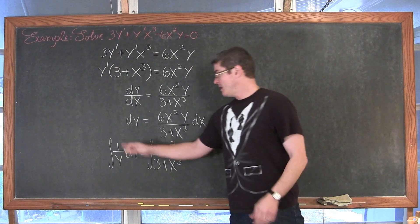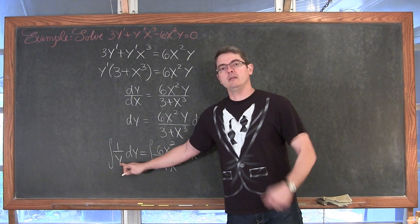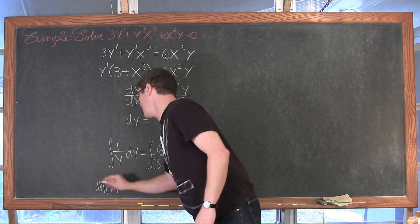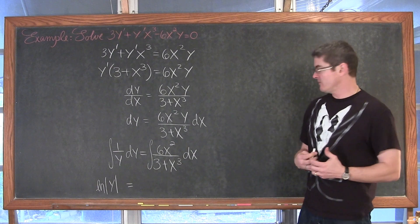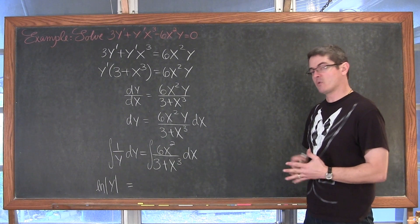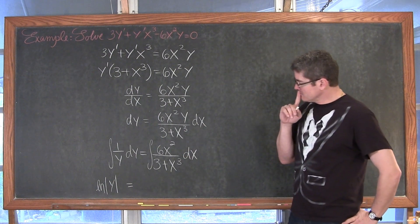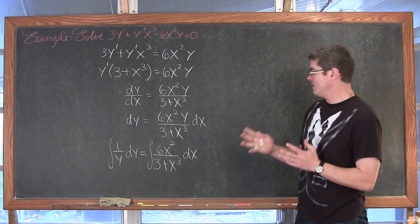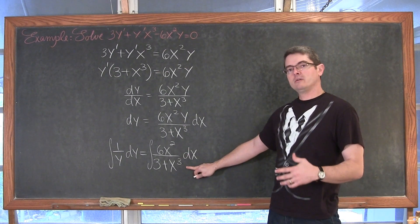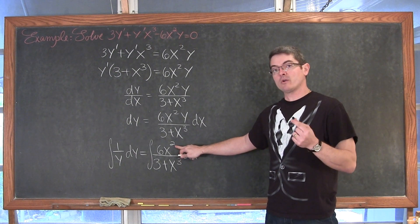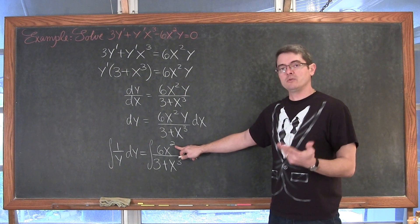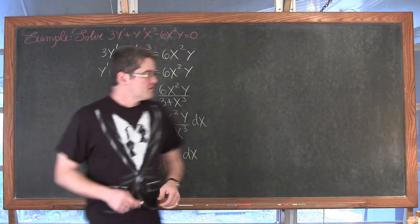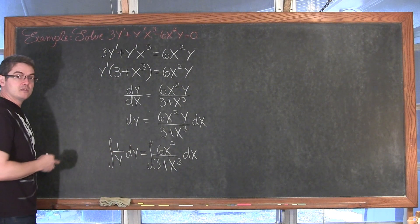Hopefully we know our integration rules. The integral of 1/y dy — just like u'/u or du/u — is going to be the natural log. So we have the natural log of the absolute value of y, because you can't take the natural log of a negative number. On the other side, the denominator has a degree one higher than the numerator, and when we take a derivative using the power rule we decrease exponents by 1. So it seems the numerator is in some form a derivative of the denominator — that's why I'm bringing up the u'/u pattern. Memorizing these integration rules, let's let u equal 3 plus x³.